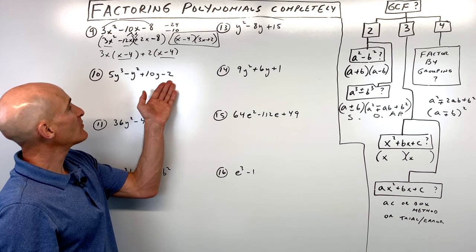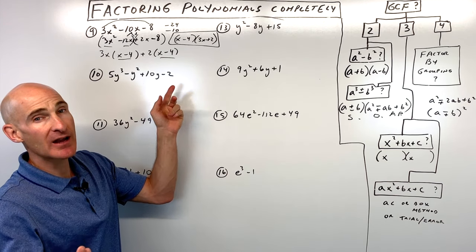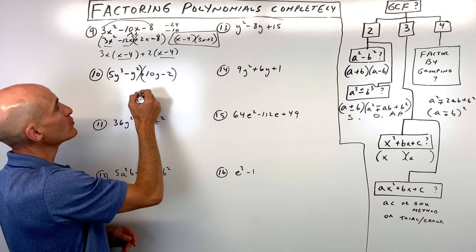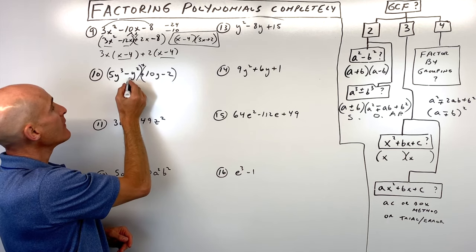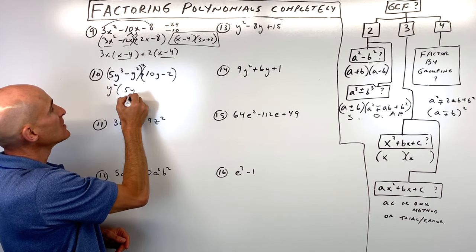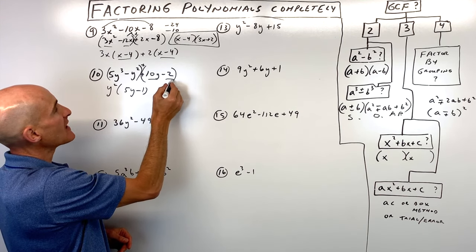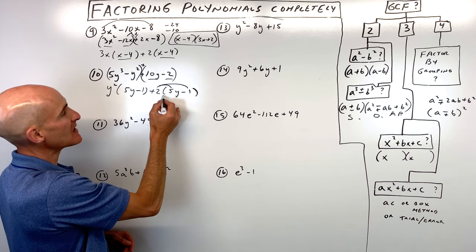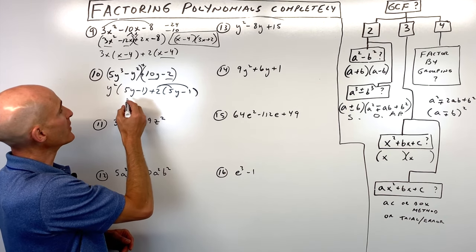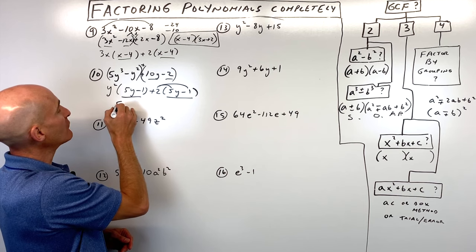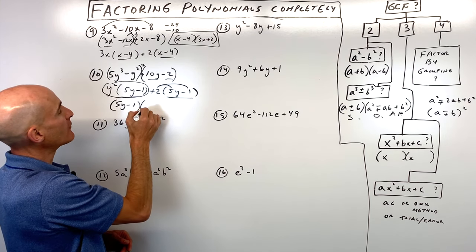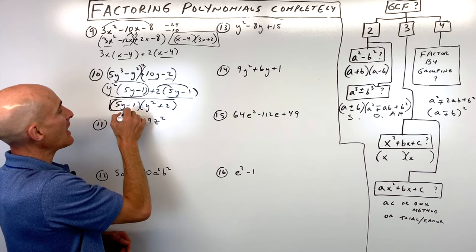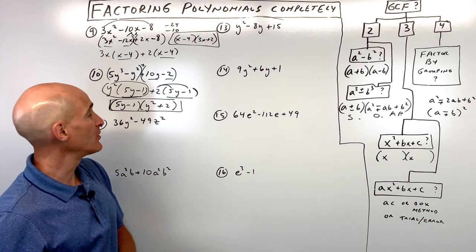Number ten has four terms and no greatest common factor, so we use factoring by grouping. Group the first two and last two terms — those are added together. Factor out y squared from the first group, giving 5y minus 1. Factor out 2 from the second group, also giving 5y minus 1. Factor out 5y minus 1 to get 5y minus 1 times y squared plus 2. We can't factor further, so it's completely factored.